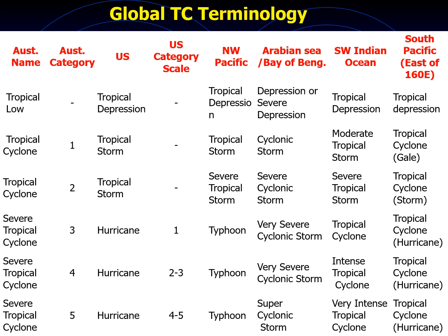For example, in the Western North Pacific it is called a typhoon, in India it is called a cyclone, and in Australia it is called a tropical cyclone. By international agreement, tropical cyclone is the general term for all hurricane-type storms that originate over tropical waters. However, sometimes for simplicity, many organizations refer to these storms as hurricanes.